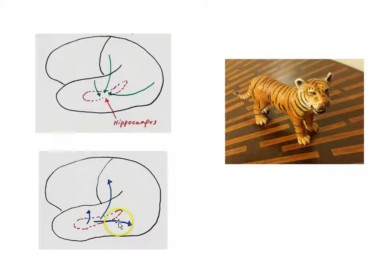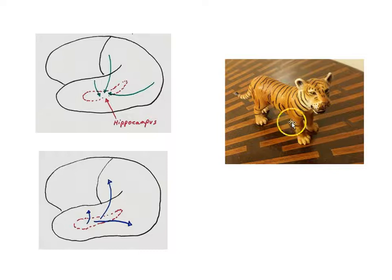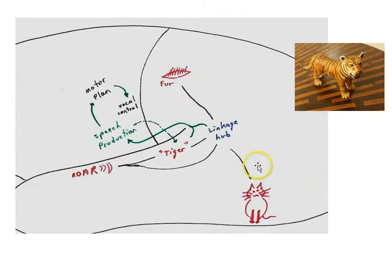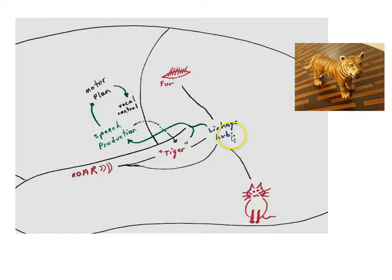You're also going to be storing information about the world — for example, the tiger. Facts about the world, the meanings of words, and the concepts we understand: we call that semantic memory. Scientists think it works like this: when the hippocampal system consolidates, not only do you consolidate the memory of the zoo event as episodic memory, but your brain is also storing information that you experienced about the world — in this case, the tiger.